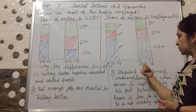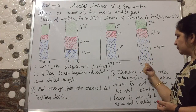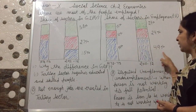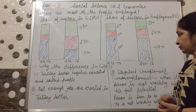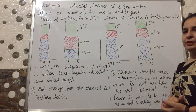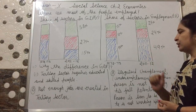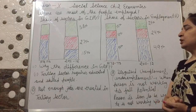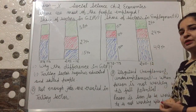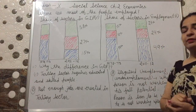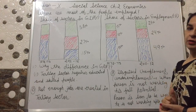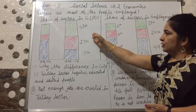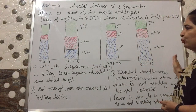Now what is the situation in 2011-12? In 2011-12, 49% of the population was engaged in the primary sector, 24% was employed by the secondary sector, and 27% of the population was employed by the tertiary sector.